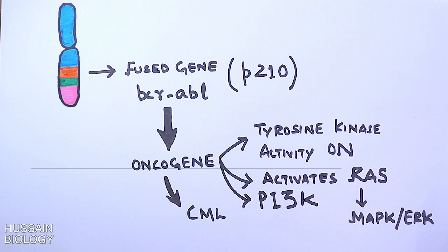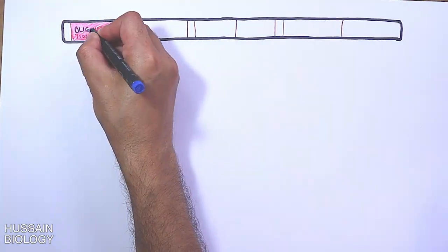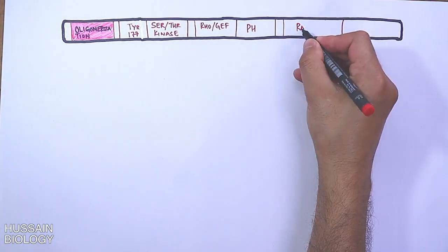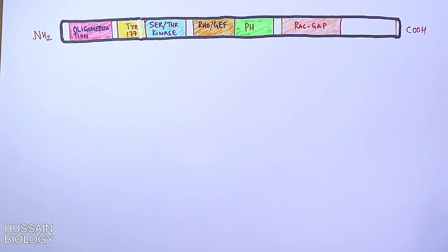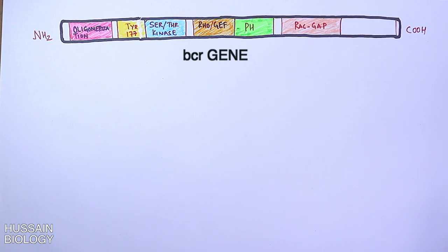Looking at the diagrammatic representation of the BCR gene, it contains a coiled-coil oligomerization domain, a tyrosine-177 domain, a serine-threonine kinase domain, a Rho-GEF domain, a pleckstrin homology (PH) domain, and a GAP domain, along with many other minor domains.